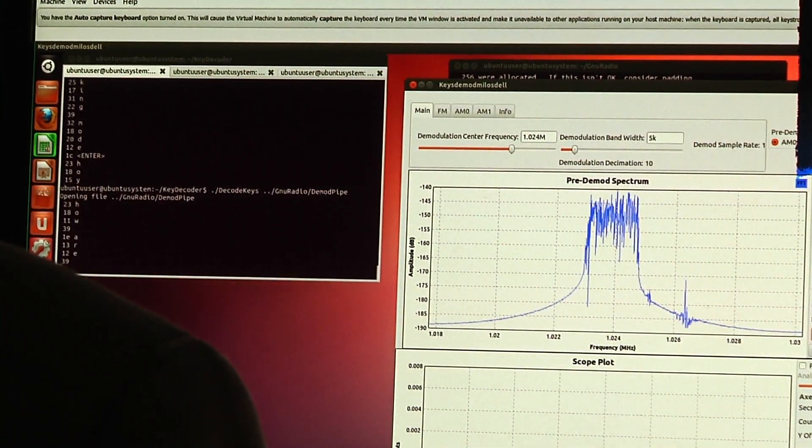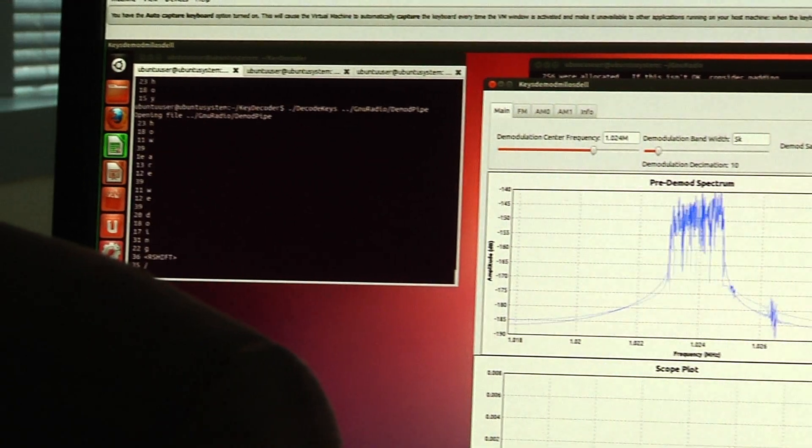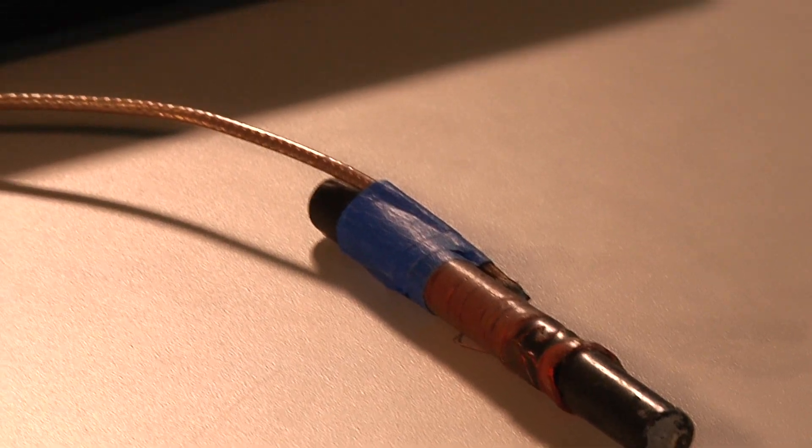A current creates an electromagnetic field, and the changes in current create a varying electromagnetic field, which is what the antenna is picking up.